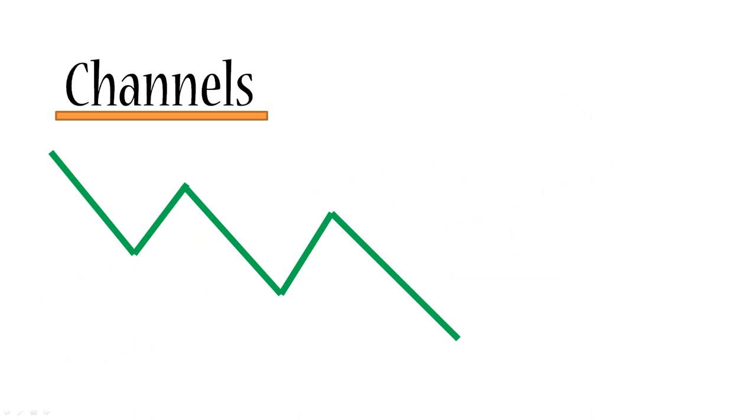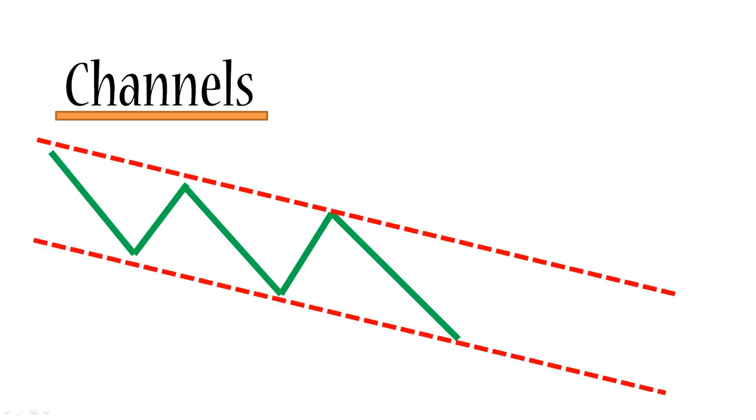Next, we're going to look at a downward channel. So here we've got a downward trend. We can draw a resistance line. If we copy that line, we can see that very often the price will also follow the copied line. So it won't break through. It will bounce off that line.